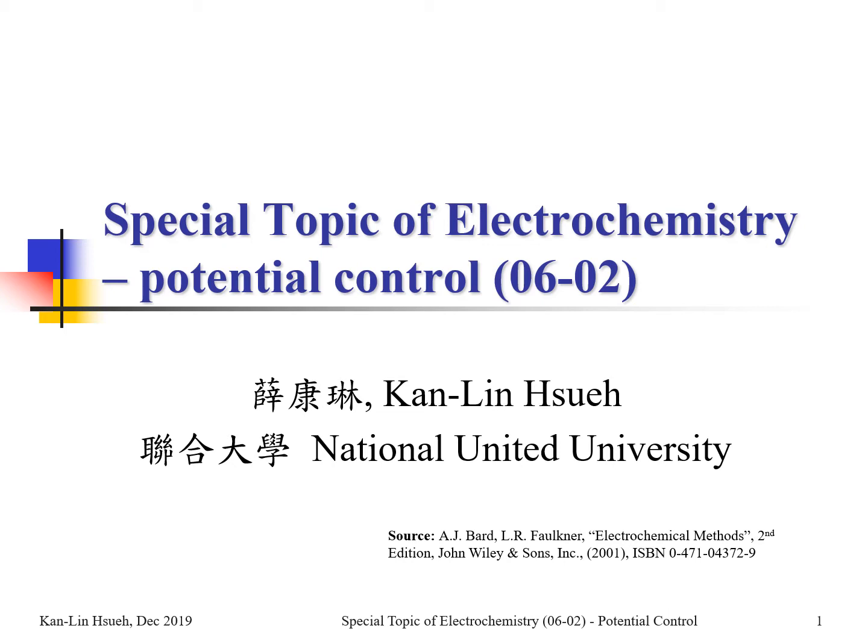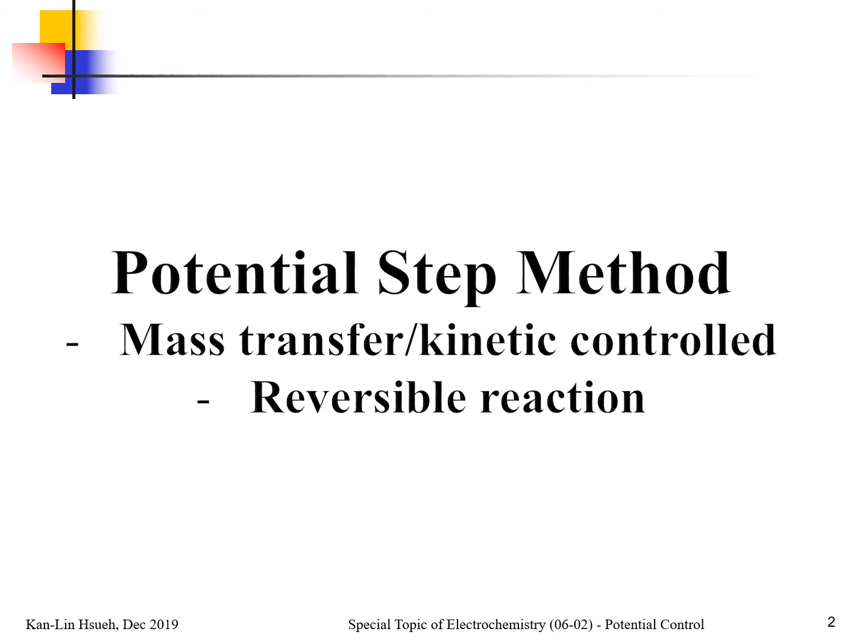In this unit, Section 2, we consider a slightly different condition. In the previous section, we used the potential step method, but the potential was so negative that the entire reaction process or current was controlled by mass transfer, and the reaction was irreversible. But in this unit, we consider the potential is not so negative — the reaction is controlled by mass transfer as well as kinetic control.